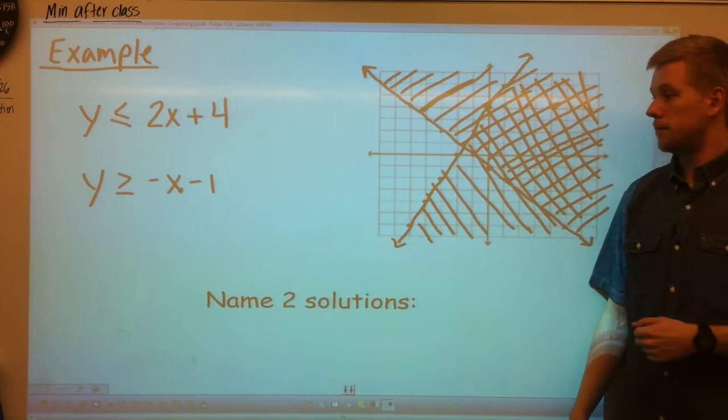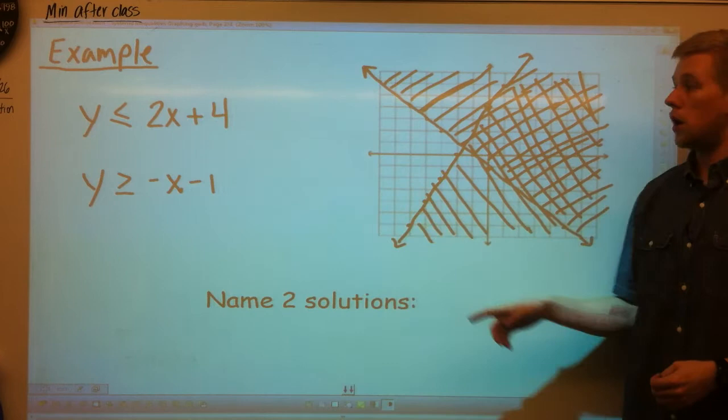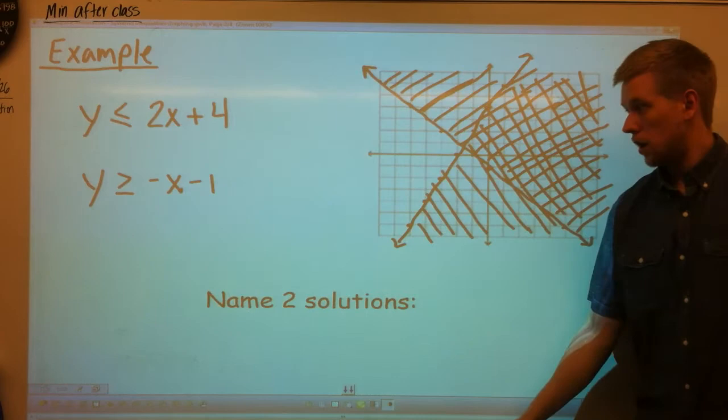Just like when we had system of equations, we would have one point, that one ordered pair. Now, because it's inequalities, you can have more than one solution. So that's a key important fact that you might want to write down. You can have more than one solution with system of inequalities. So any solution, any ordered pair in this region would be a solution. So those are two quick easy ones.